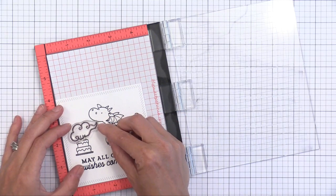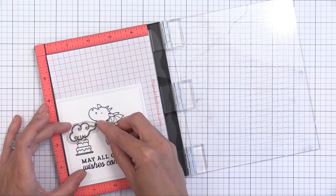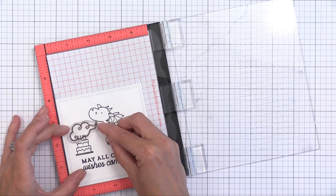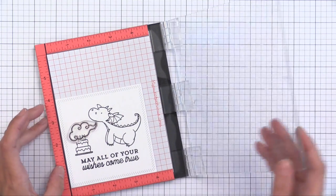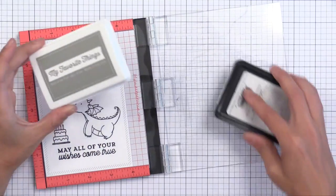I stamped my first images with a Copic friendly black ink. This is My Favorite Things black hybrid ink. But I wanted the cloud that the dragon is blowing out the candles with to be lighter, so I'm stamping that with a gray hybrid ink from My Favorite Things, just so it would be more subtle than the black.